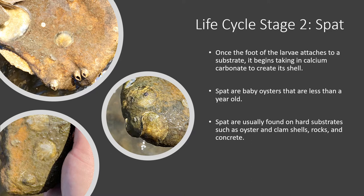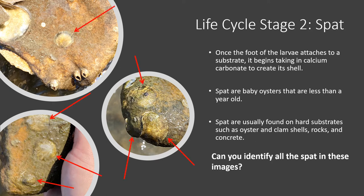Oysters and oyster shells are not the only substrate spat settle on. Other suitable substrates include rocks, concrete, and clamshells. Look at the pictures on this slide — each picture contains at least one oyster spat in it. Take a moment to see if you can spot all the spat in these images. How many spat did you spot? Were you able to identify all the ones pictured here? If so, congratulations — you are spat-tacular at identifying spat! If you missed a few, don't worry. Oyster spat can blend into their substrates, making it hard to see them.